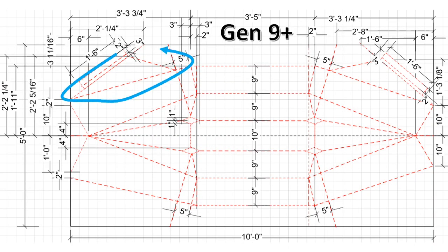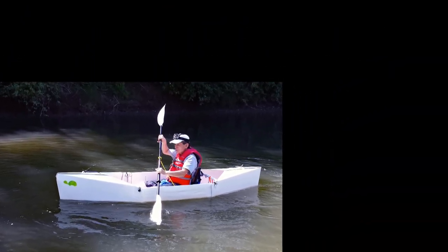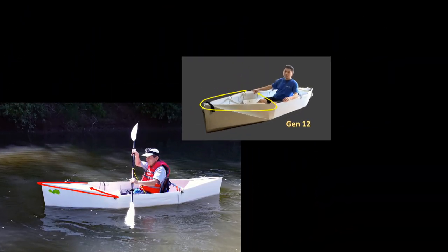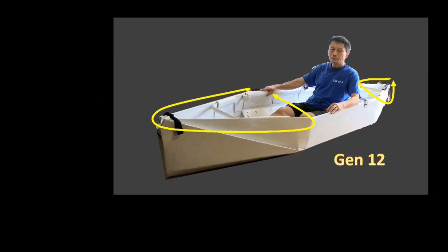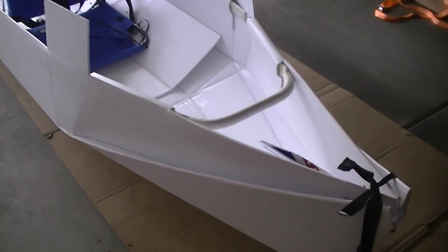Gen 12 also eliminated the small decks in the front and at the back. That means less work in building this boat. But I need to compensate the structural strength the decks provided.